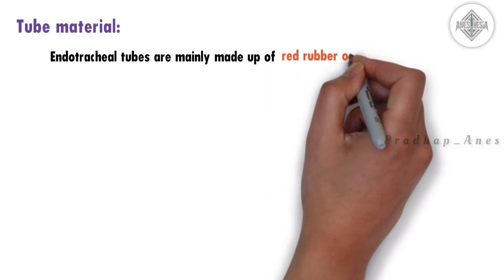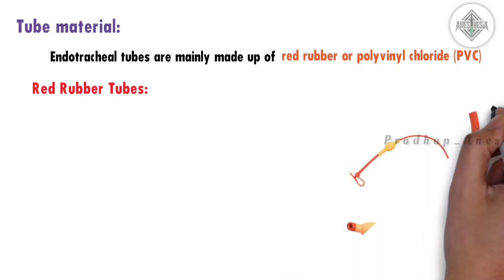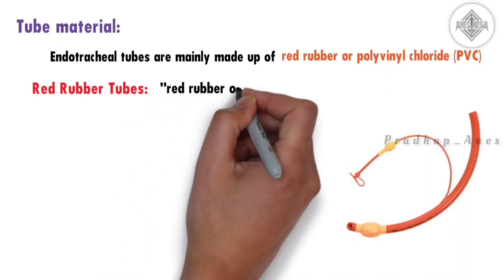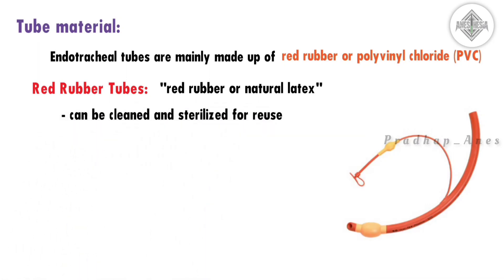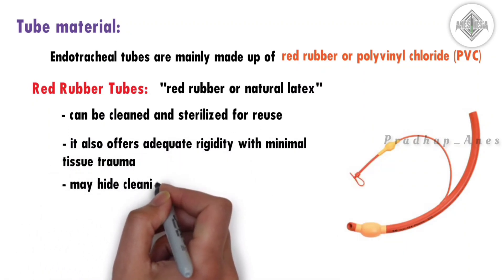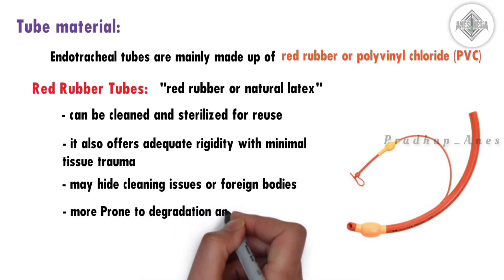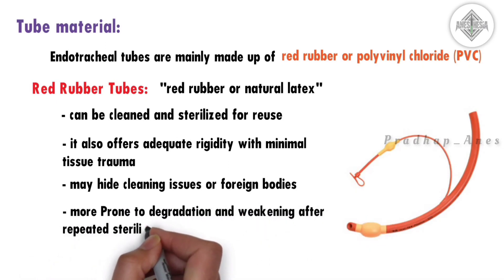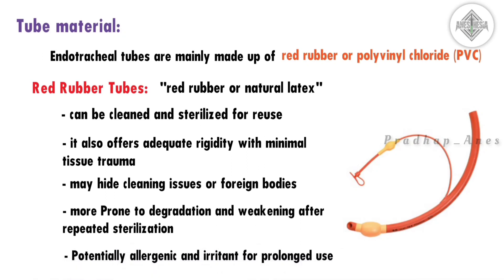Next, we'll look at tube material. Endotracheal tubes are mainly made of red rubber or PVC. Red rubber tubes are made from natural latex and can be cleaned and sterilized for reuse. They offer adequate rigidity with minimal tissue trauma. However, red rubber is non-transparent, which may hide cleaning issues or foreign bodies, and the tube is prone to degradation after repeated sterilization. The material is also potentially allergenic and irritant for prolonged use, which is why it has largely been replaced.